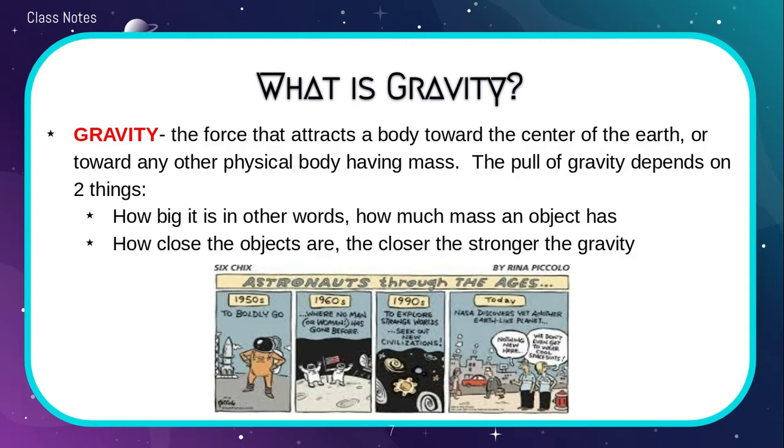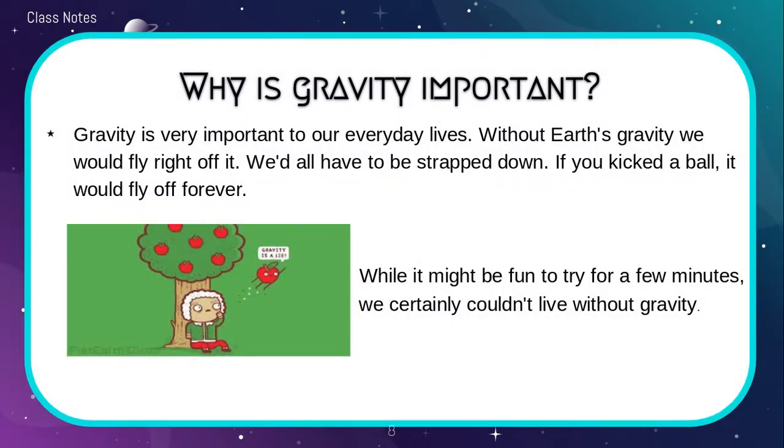But gravity in a sense of the solar system and the universe, there's two big things that it depends on. It depends on how big or how much mass an object has and how close the objects are together. So the larger the object, the more gravitational pull it has. And the closer the two objects are together, the more gravitational pull they're going to have.